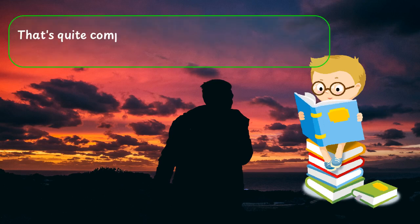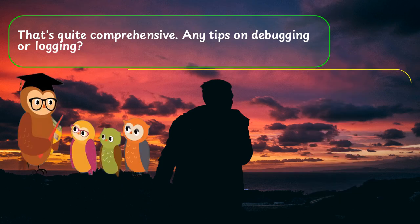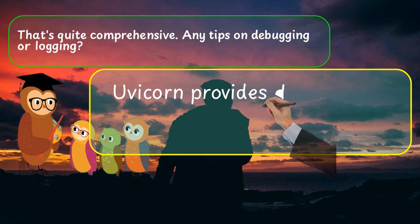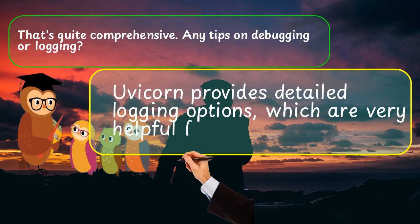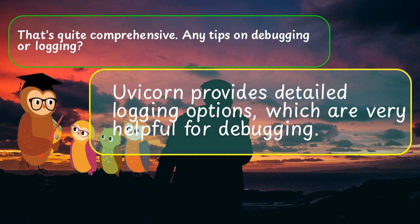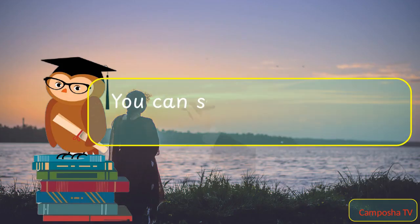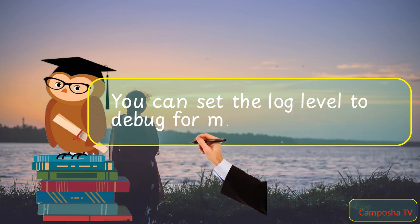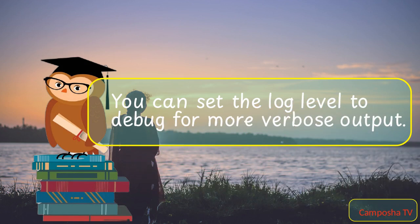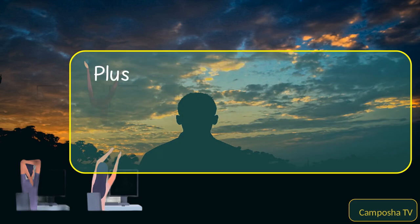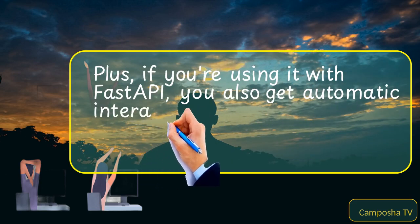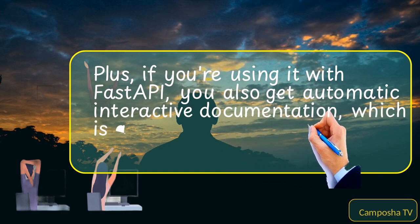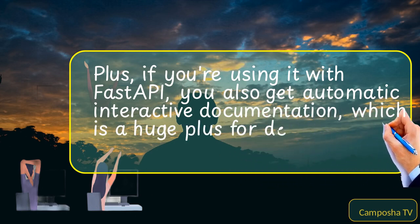That's quite comprehensive. Any tips on debugging or logging? Uvicorn provides detailed logging options, which are very helpful for debugging. You can set the log level to debug for more verbose output. Plus, if you're using it with FastAPI, you also get automatic interactive documentation, which is a huge plus for debugging and development.